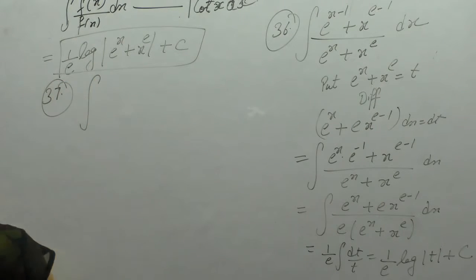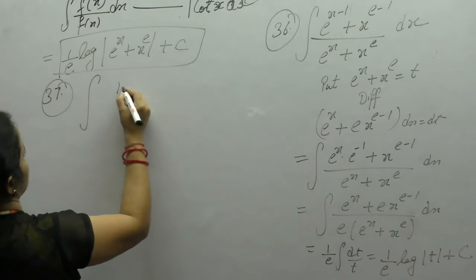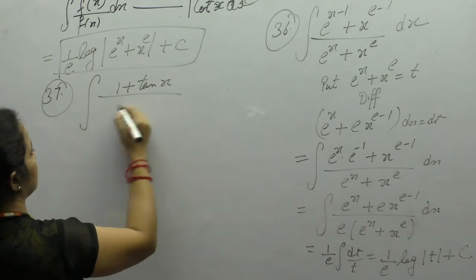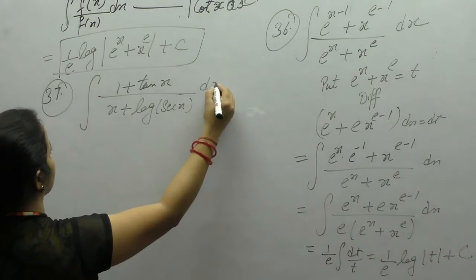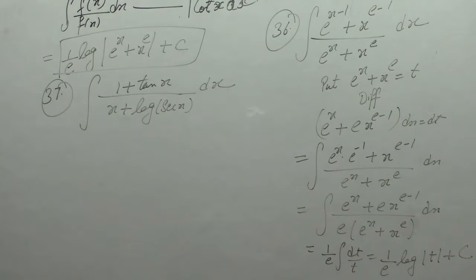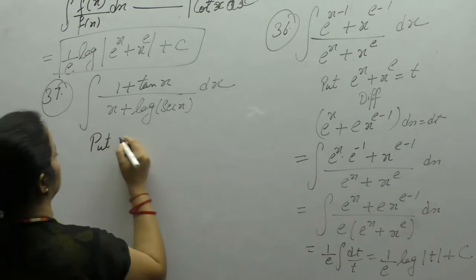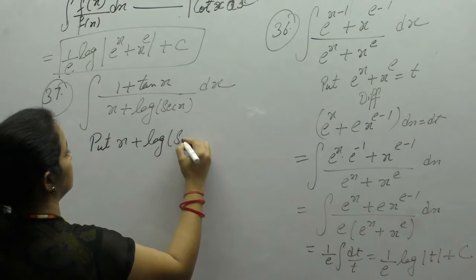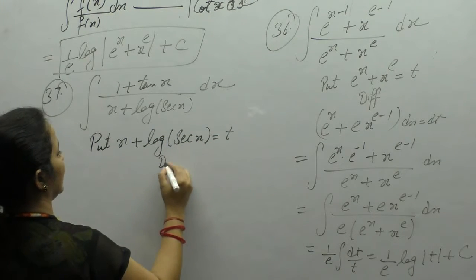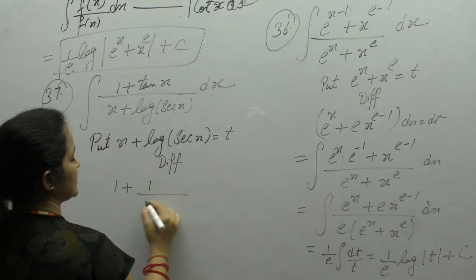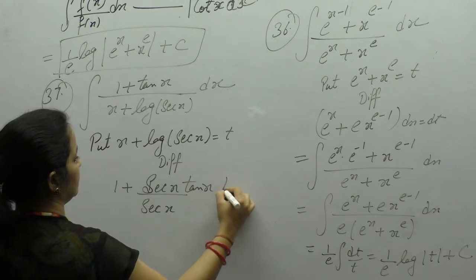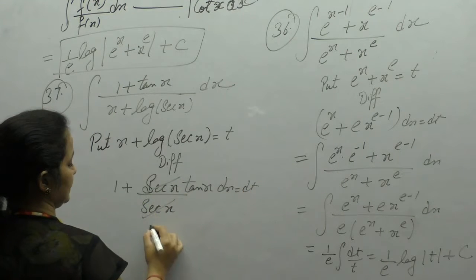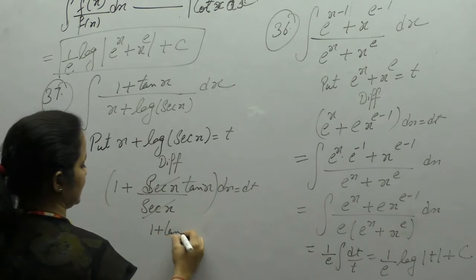Next question is integration of (1 + tan x) upon (x + log of sec x) dx. We put the denominator as t. Differentiated: derivative of x is 1, derivative of log x is 1 upon x, and derivative of sec x is sec x·tan x. Sec x will be cancelled. We get 1 plus tan x dx is equal to dt.